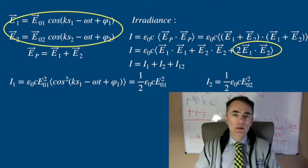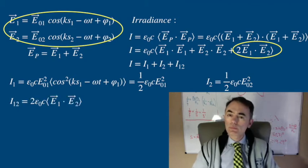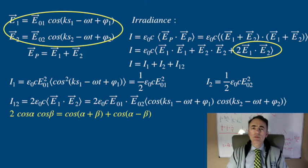Let's write in more detail this interference term. We are using again the trigonometric identity of the product of two cosines.